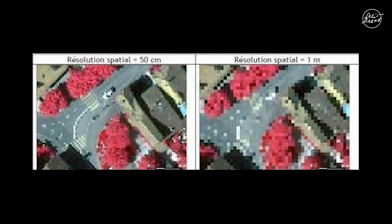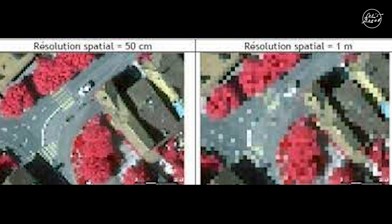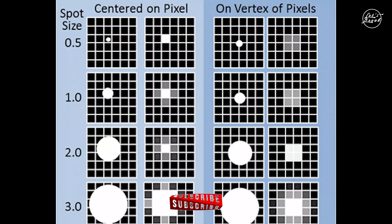For spatial resolution, imagine gradually descending from a hot air balloon. As you descend, your eyes start recognizing features because everything is sharper. For any type of sensor, this means the spatial resolution is becoming finer. Spatial resolution is the detail in pixels of an image. High spatial resolution means more detail in the smaller grid cell size, whereas lower spatial resolution means less detail in larger pixel size.